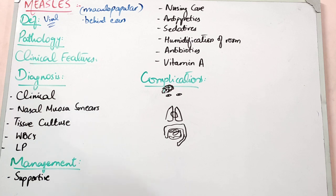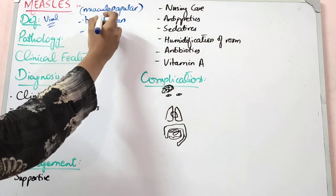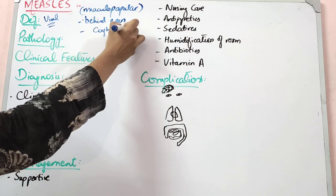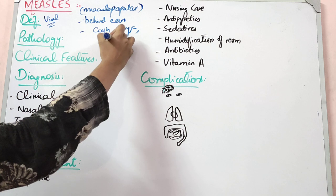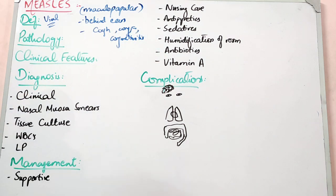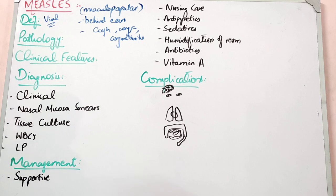The third important thing about measles is that three C's are always associated with it: Cough, Coryza, and Conjunctivitis. You must remember these. When this scenario comes up, these three C's are your clue. You don't have to memorize a lot — just remember these three C's are associated with measles.